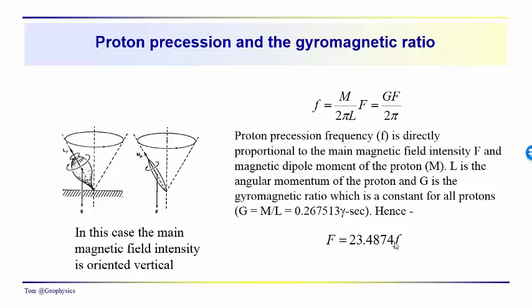We basically measure this frequency here. And so the magnetic field intensity, then, is equal to 2 pi times the frequency divided by the gyromagnetic ratio. So we have, basically, a linear relationship, direct proportionality between the magnetic field intensity and the frequency of precession. So higher frequencies of precession, higher total field intensity.